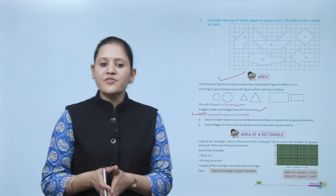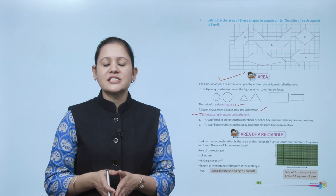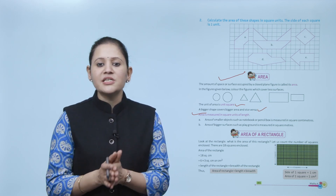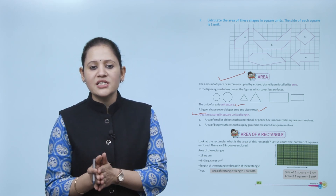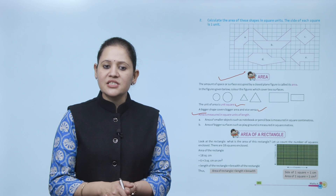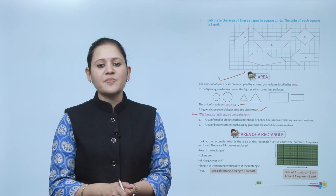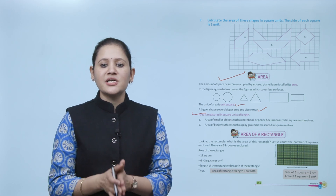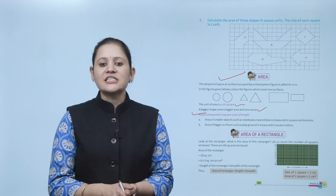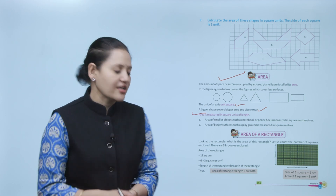Area of small objects such as a notebook or pencil box is measured in square centimeters. Area of bigger surfaces such as a playground is measured in square meters. Next is area of rectangle.